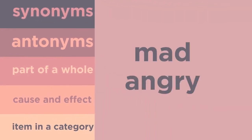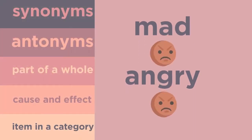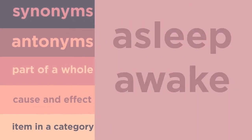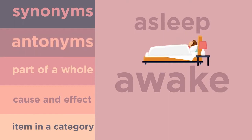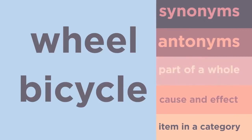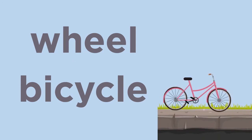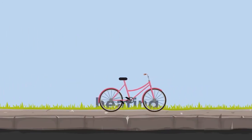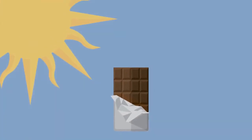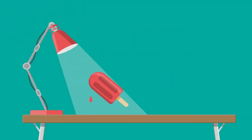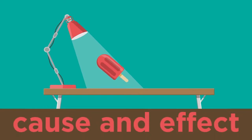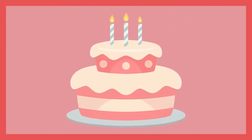Let's look at mad and angry. These two words are synonyms — they have similar meanings. What about asleep and awake? These are antonyms — they are the opposite of each other. Let's have a look at wheel and bicycle. Wheel and bicycle are parts of a whole. Let's look at heating and melting. Heating and melting are cause and effect — when you heat up an ice lolly, it will melt. How about cake and dessert? Cake and dessert is item in a category.